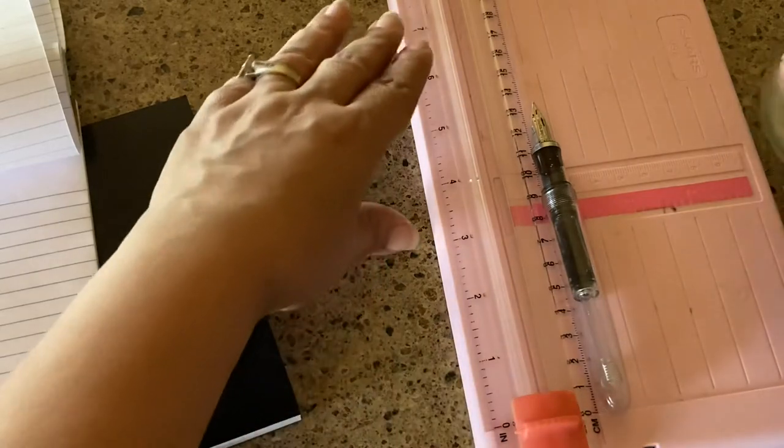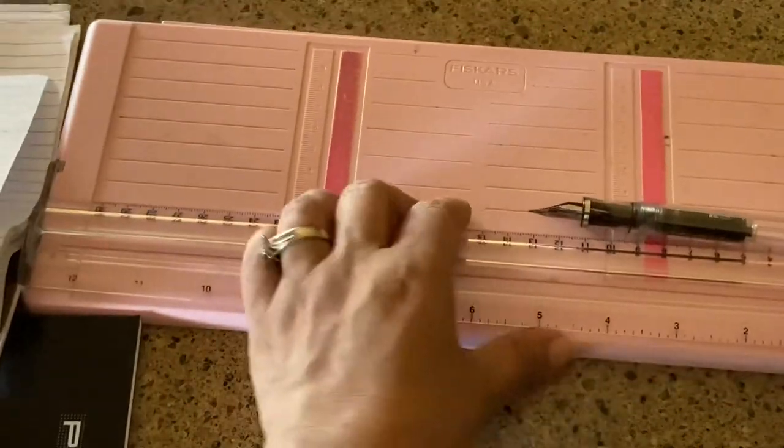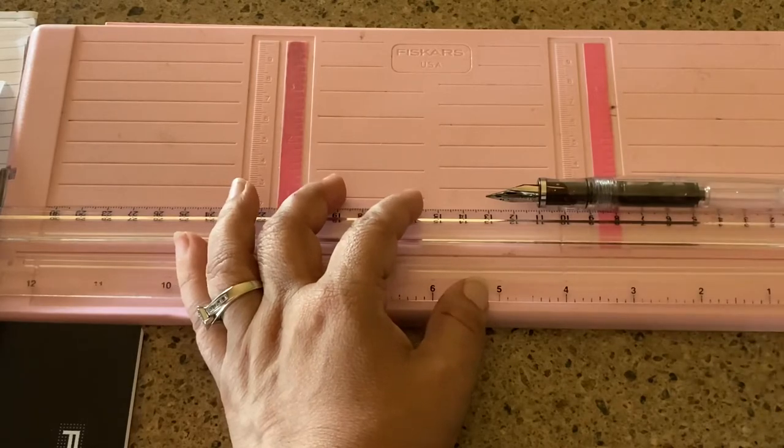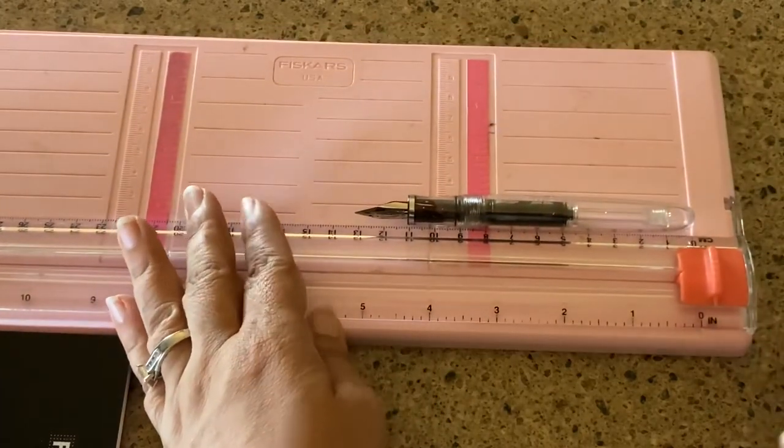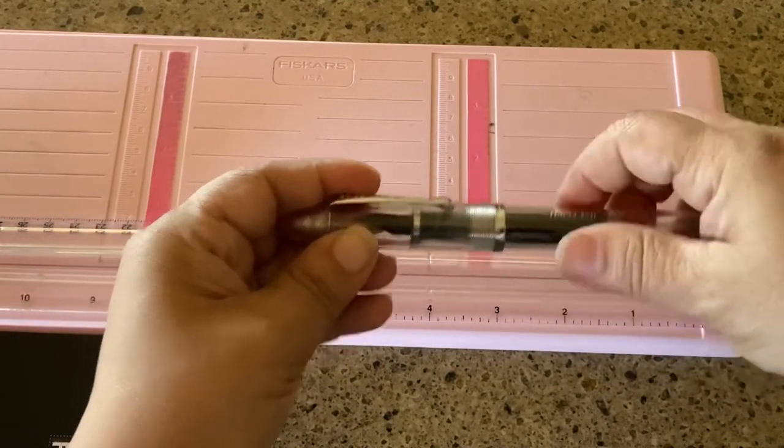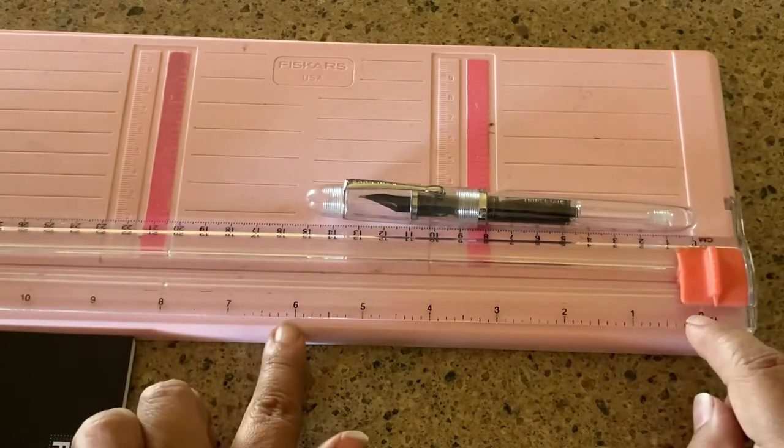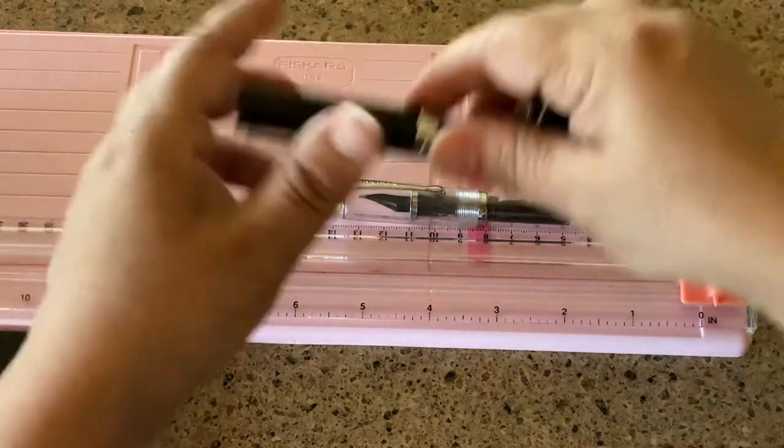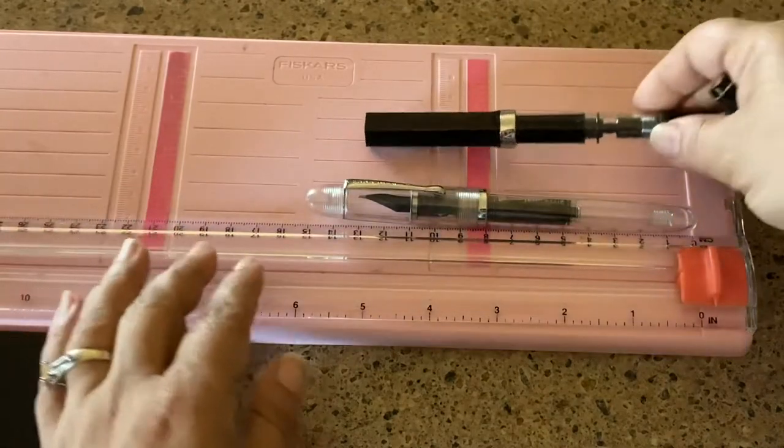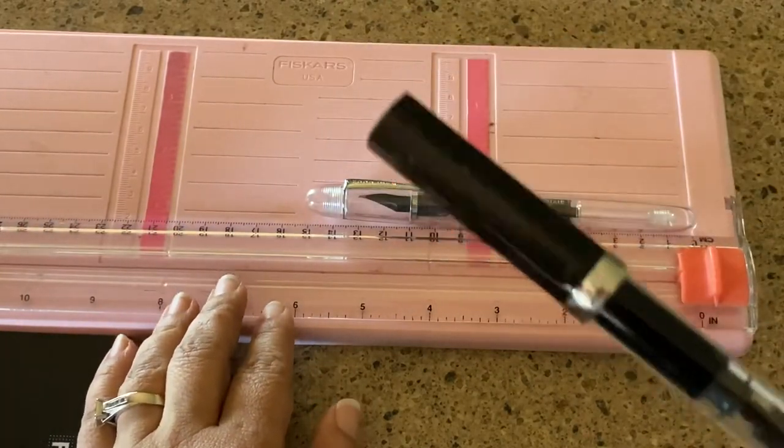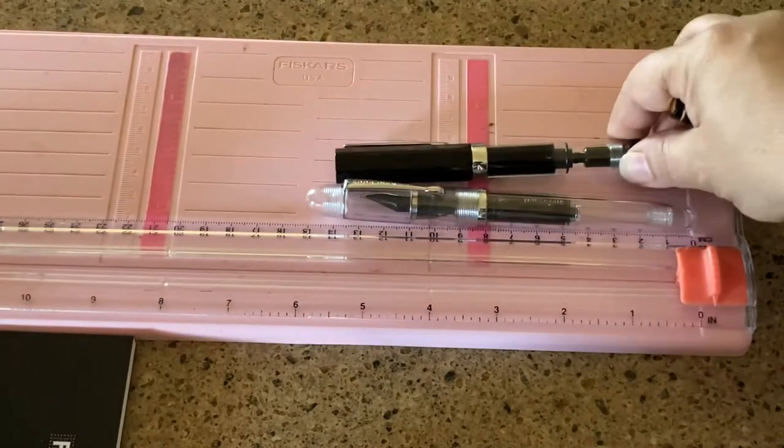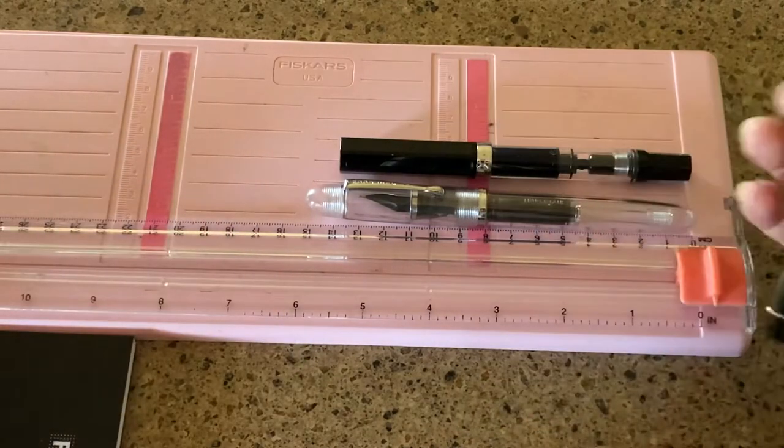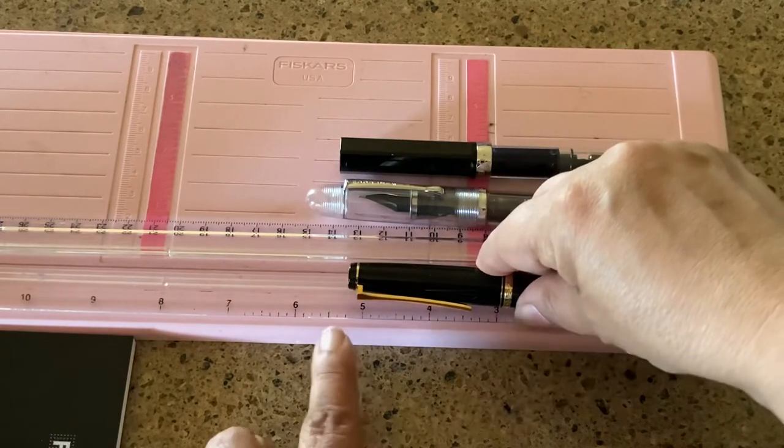So here we are. This is not capped and not posted. There's the zero line here and it's right above the five inch mark, if you can see it. And then if it's capped, it's a lot larger. You're right at six inches. I'm going to grab a few of my pens here so that I can show you. I have the TWSBI Eco. This is also capped. You can see that little portion sticks out and that's right at five and a half.